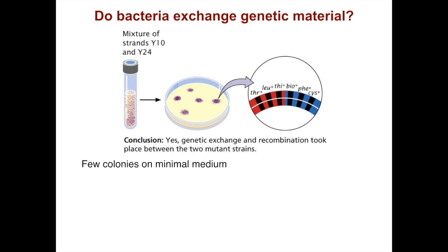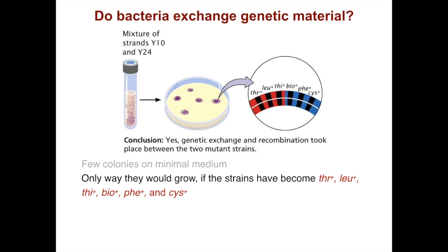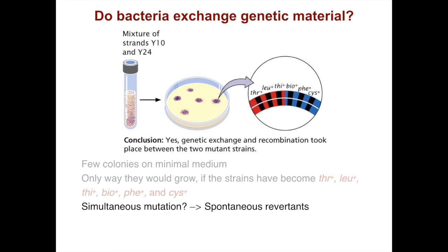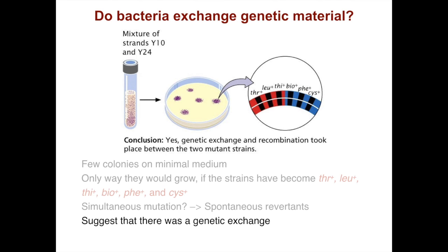The only way those colonies could grow was if the strains had become wild-type for all these different essential nutrients. They wondered if this was some sort of spontaneous or simultaneous mutation where you got revertants — somehow the mutation causing those genes not to function was spontaneously fixed. That seems like a possibility, but a more rare one. It was more likely that this experiment suggested there was a genetic exchange.